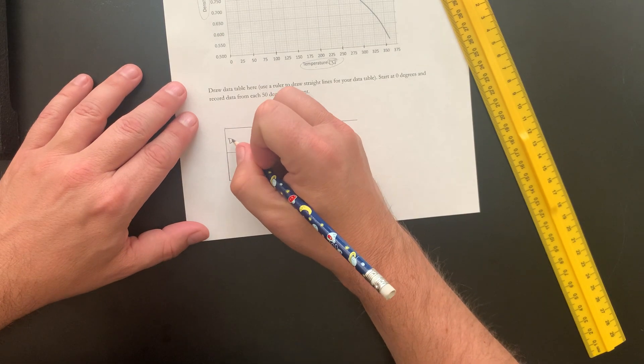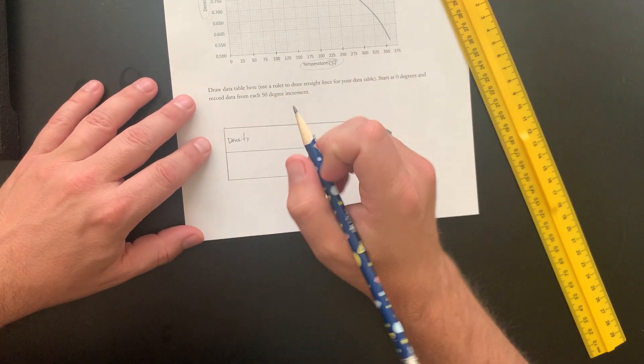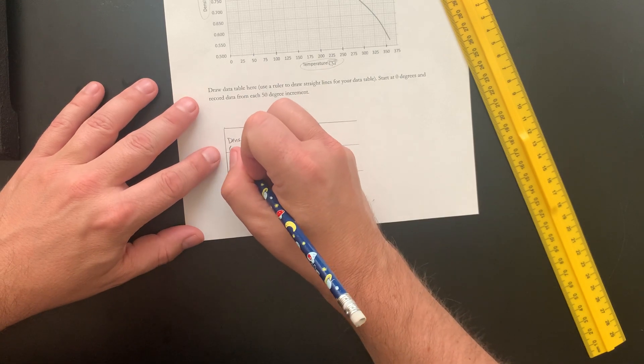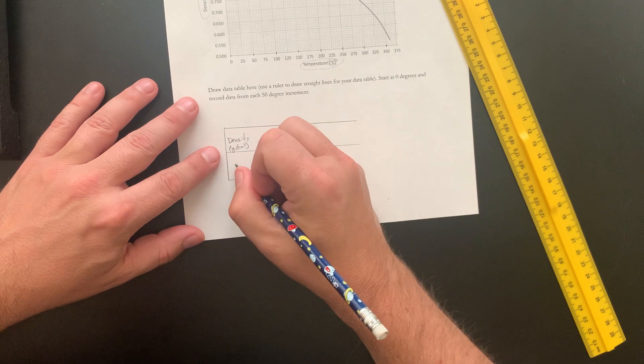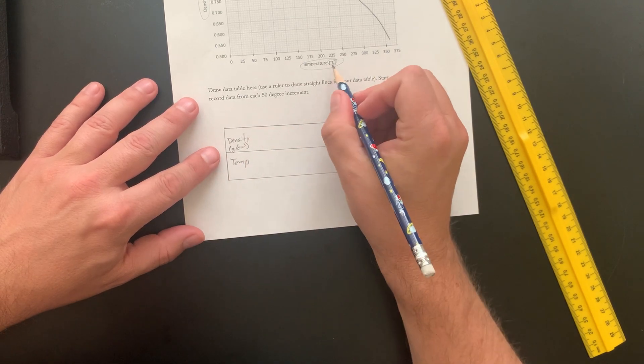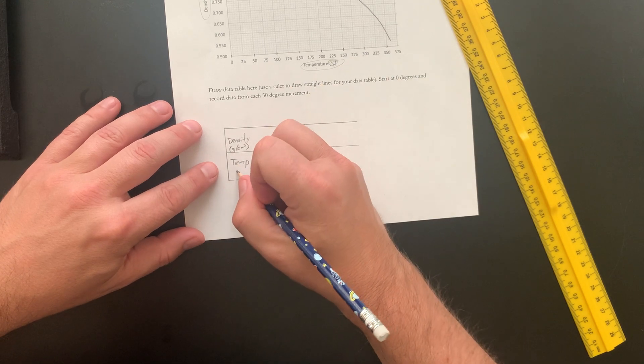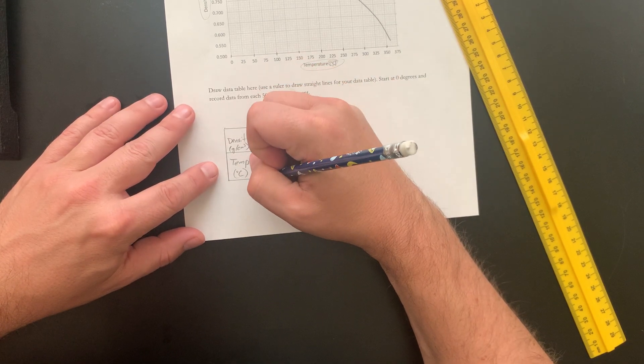Now first is density. And I should include the unit. So density, which is grams per centimeter cubed. And then below that, I can do temp. And I want to include the units, which is degrees Celsius.